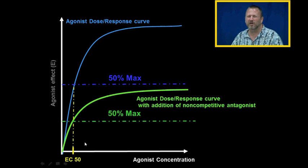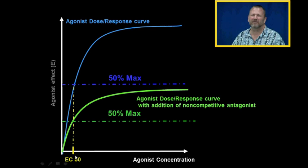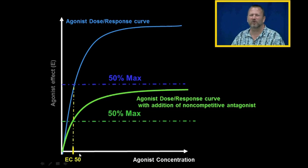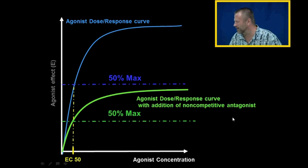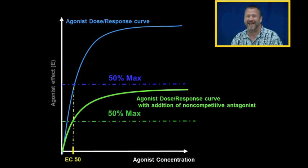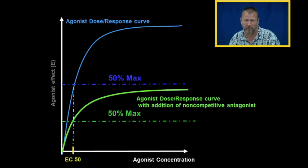Importantly, the EC50 remains the same in the presence of non-competitive antagonist. The dose required to reach half of maximal effect is the same whether or not non-competitive antagonist is present. This is why non-competitive antagonists are being developed more and more as therapeutic medications — because the body is not able to overcome their effects.